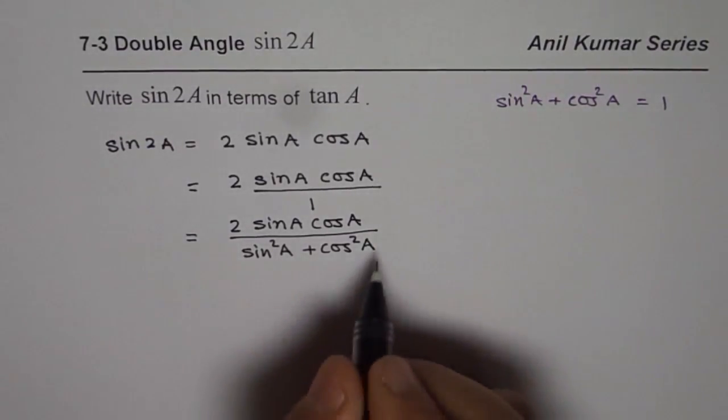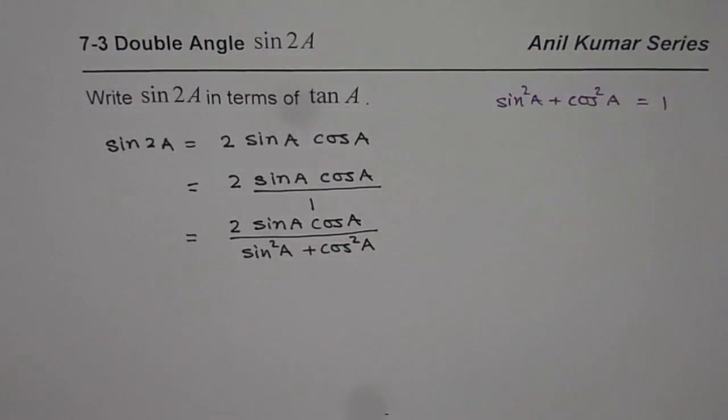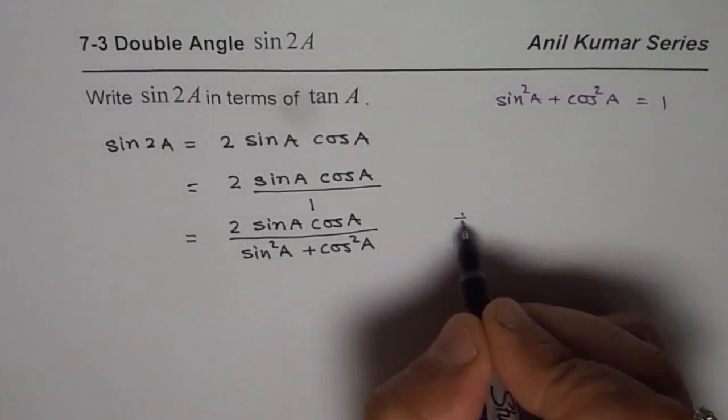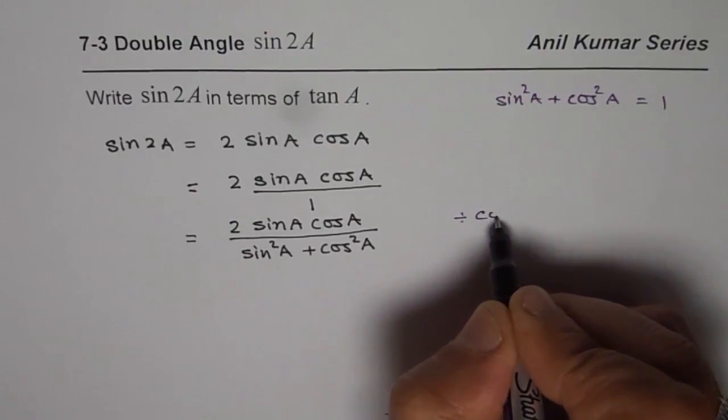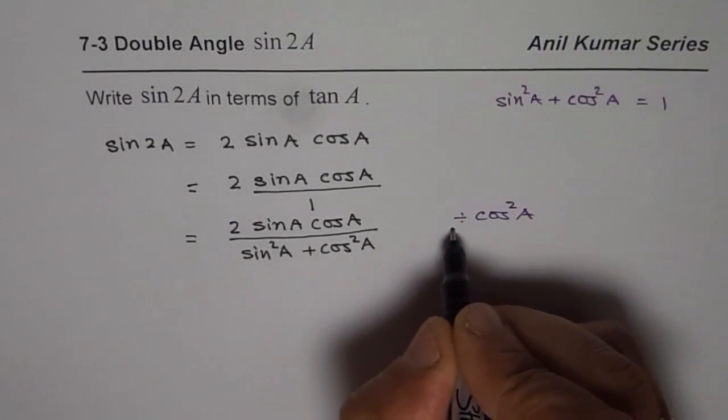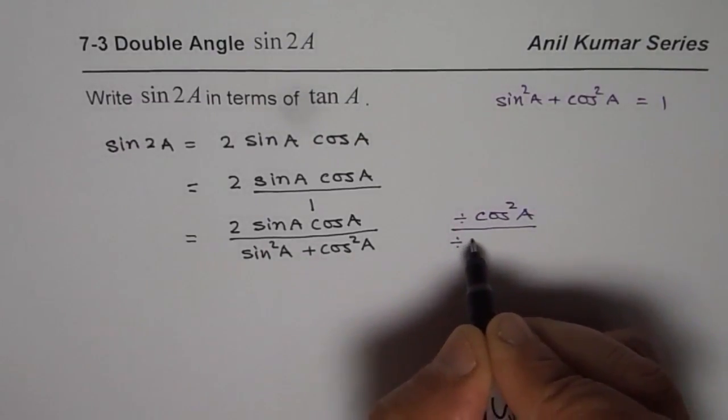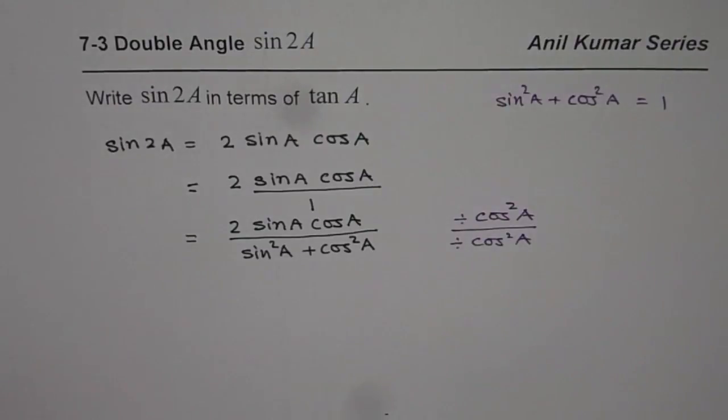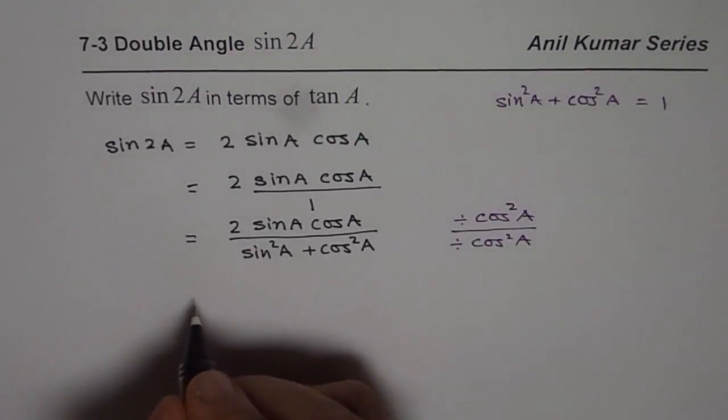How to get it in terms of tan? To get it in terms of tan, we can divide both numerator and denominator by cos square A. Then what happens? That means we are dividing both numerator and denominator by cos square A. Then what will I get?